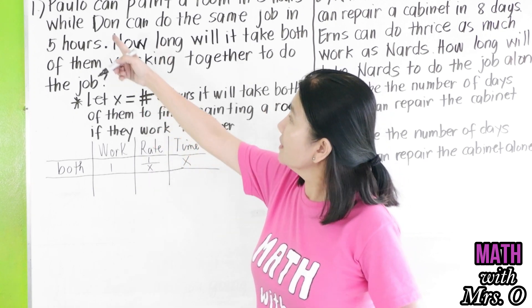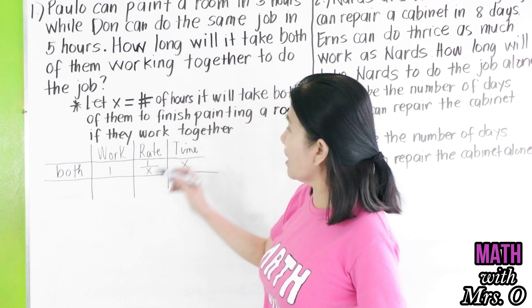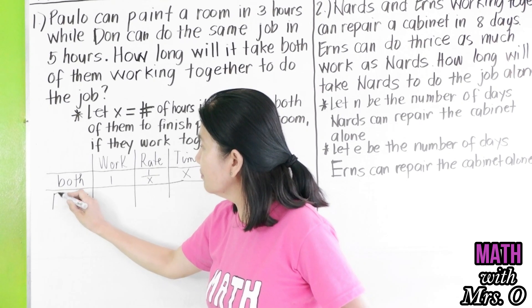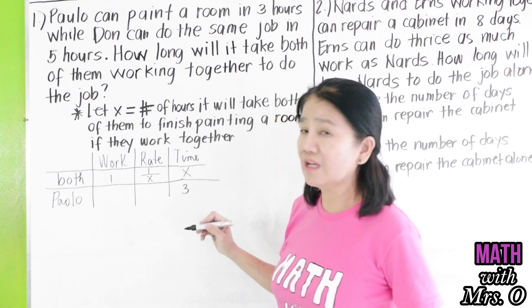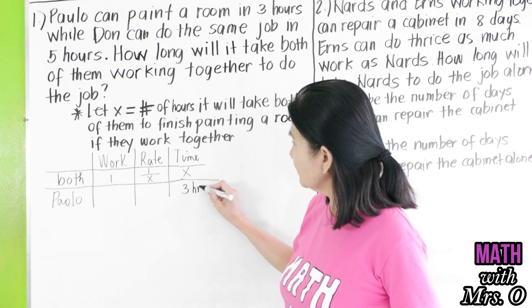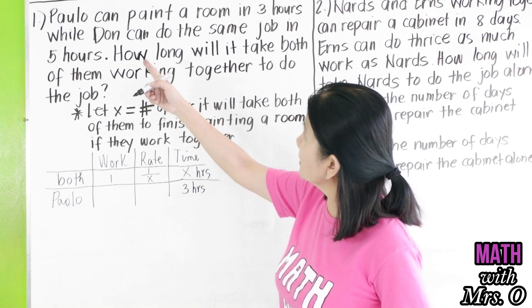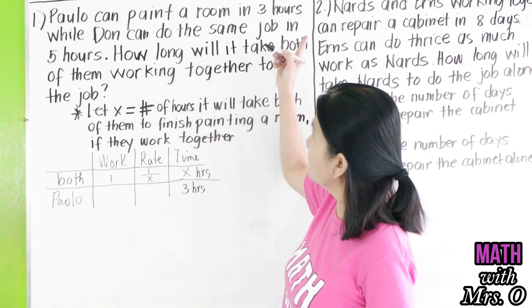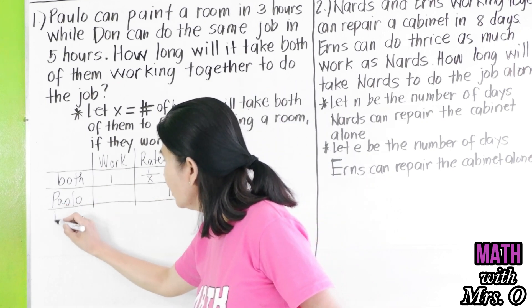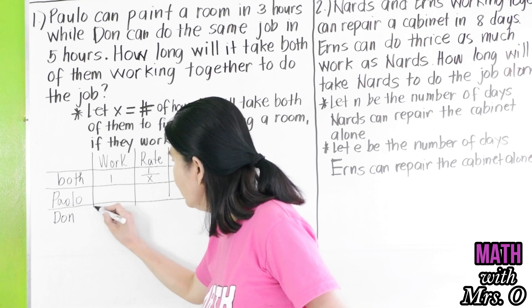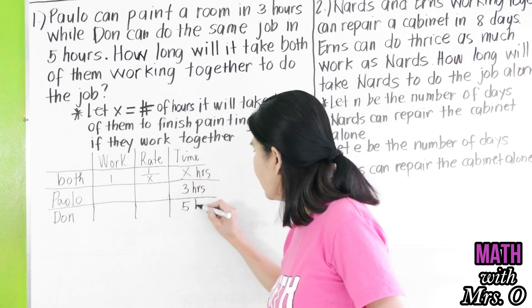Then go back to the problem. It says here that Paolo can paint a room in three hours. So we fill this up for Paolo. The time of Paolo is three hours. These are all in hours. While Don can do the same job in five hours. So we make another column or row for Don. This is five hours.